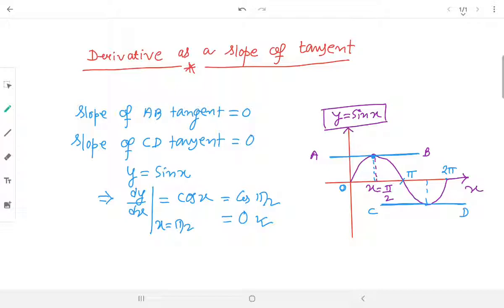If you want to find out slope of CD tangent by using the help of the derivative, then just put the value x equals to 270 degree, which is 3 pi by 2. So, if I put the value x equals to 3 pi by 2 here, then cos 3 pi by 2, which is equals to 0.